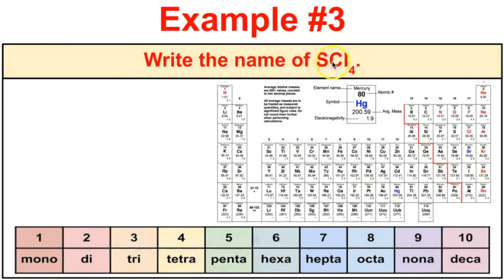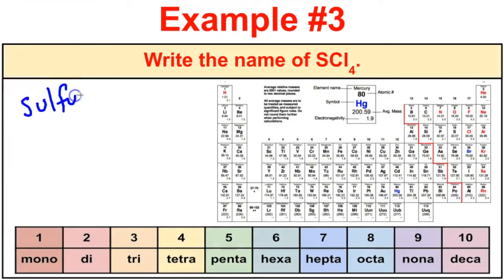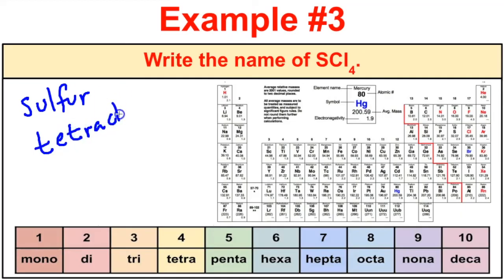Next example: SCl4. There is 1 sulfur, and we don't use the prefix mono when the first element has a subscript of 1, so it's just sulfur. Then there are 4 chlorides — the prefix for 4 is tetra — giving tetrachloride. The correct chemical name is sulfur tetrachloride.